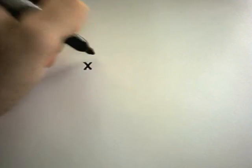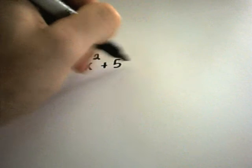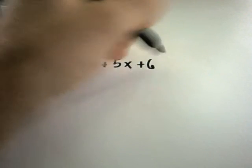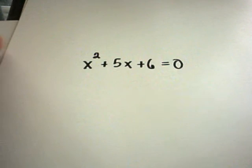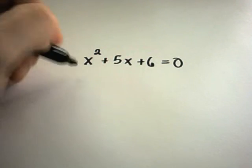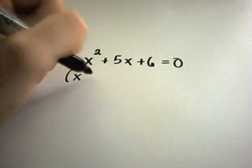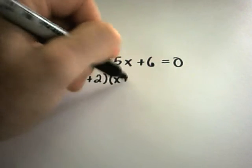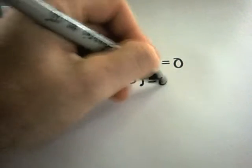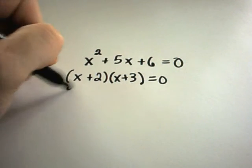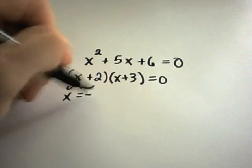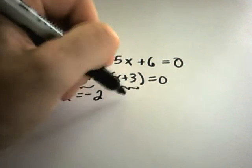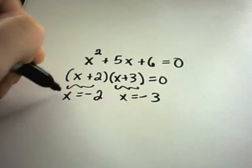Consider this quadratic equation. Suppose we have x squared plus 5x plus 6 equals 0. This is one that we could certainly easily factor as x plus 2 times x plus 3 equals 0, and then we would set each piece equal to 0 and get our solutions of negative 2 and negative 3.